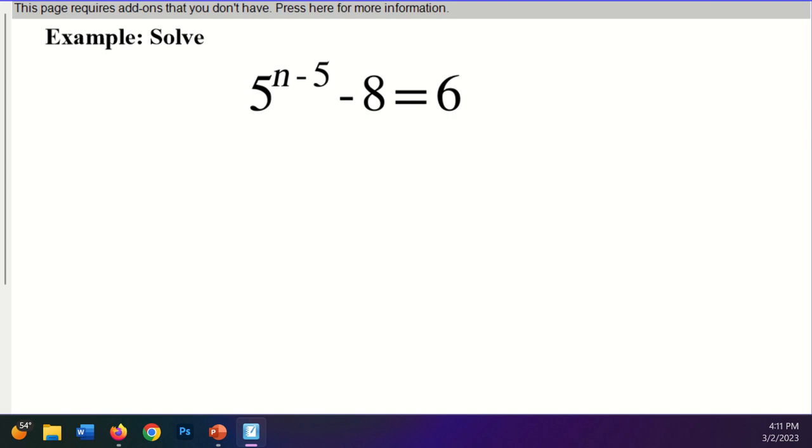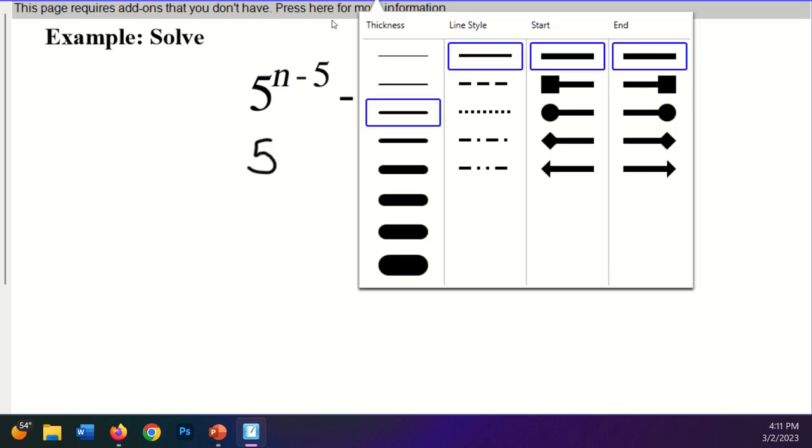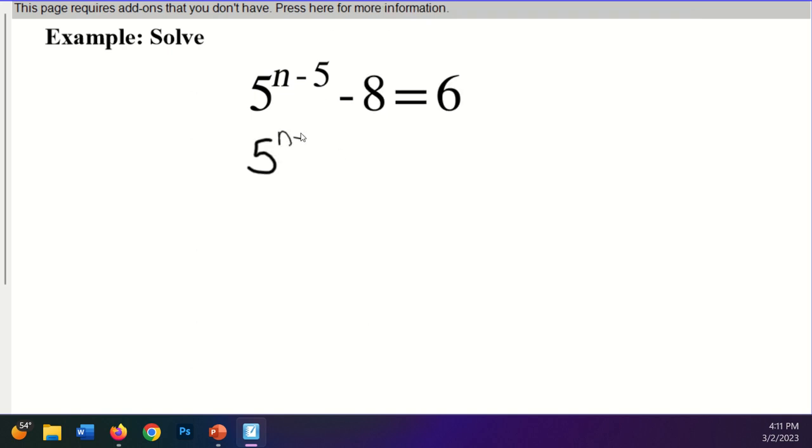A real simple place to start is this expression right here. So I have 5 to the n minus 5 minus 8 is equal to 6. Now logarithms are on the same level as exponents, and so if I want to take the logarithm of both sides, I have to get this exponential by itself first. So I'm going to add 8 to both sides. So I'll have 5 to the n minus 5, and then 6 plus 8 is going to give me 14.